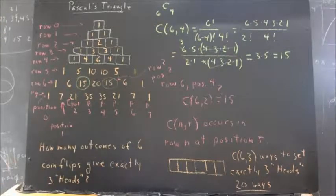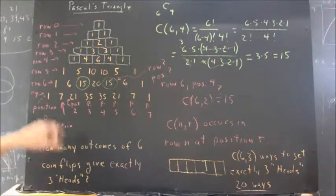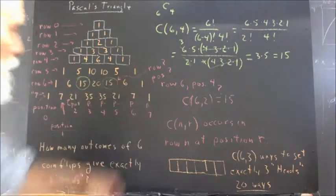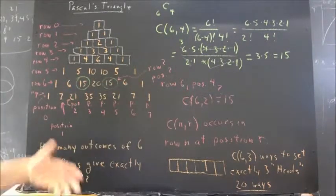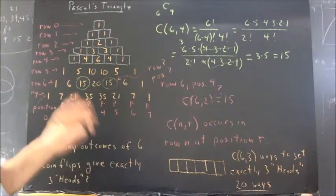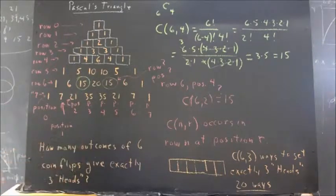Well, how many possible outcomes are there? We're either going to get zero, one, two, three, four, five, or six heads. So if we add up these numbers, we're going to get the total number of outcomes you can get if you flip six coins.